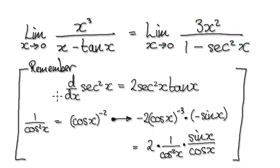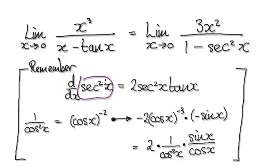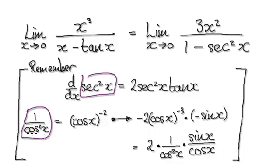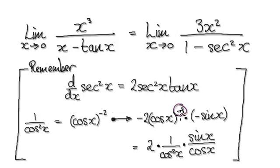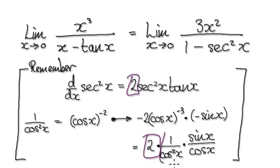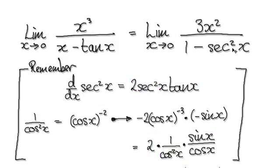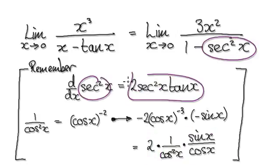Now to differentiate this — you should know this by now. You can visualize secant squared as 1 over cos squared of x, then rewrite it and use the chain rule. Using the chain rule, take the power down, the power gets reduced by 1, and then multiply by the derivative of the inner function. Rewriting: this gives us 2, then secant squared, then tan. So when you differentiate secant squared of x, it gives you 2 secant squared x tan x.